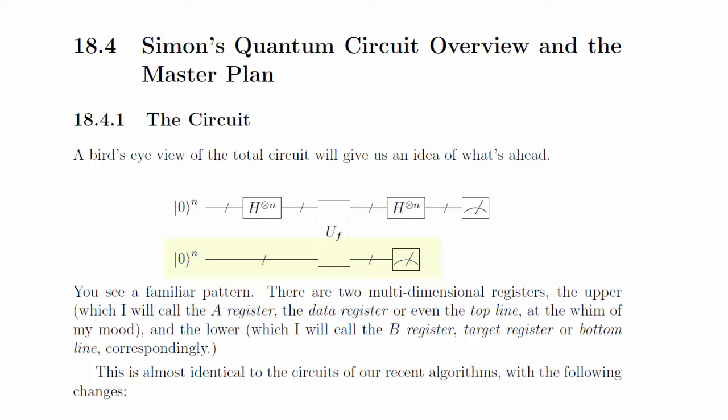Also, the state we're sending into the Oracle's B register? It's ket0 rather than ket1. That second point shifts the entire emphasis away from the phase kickback, which doesn't help us here, to the much more widely applicable generalized Born rule.